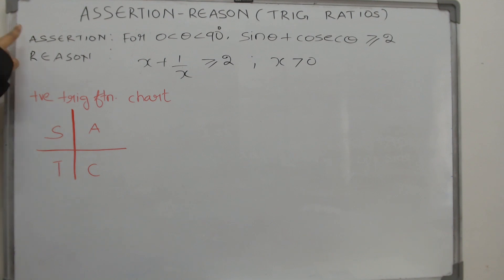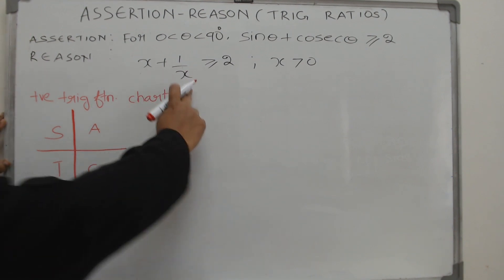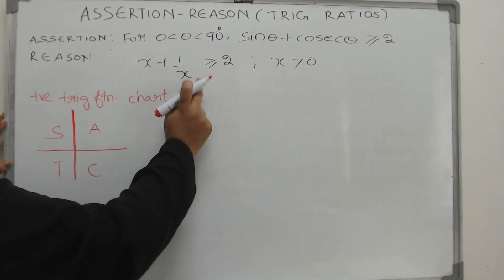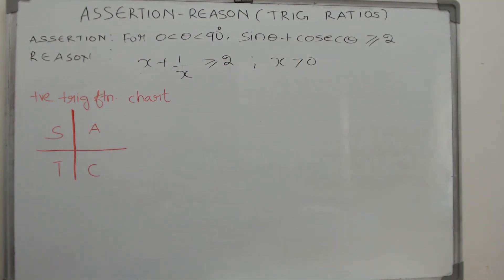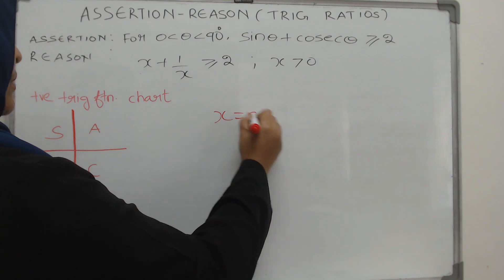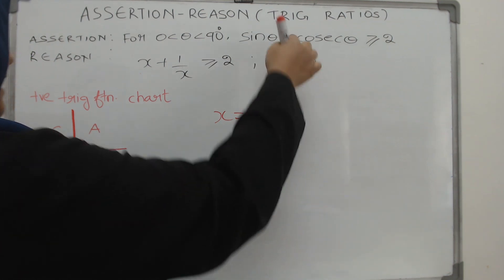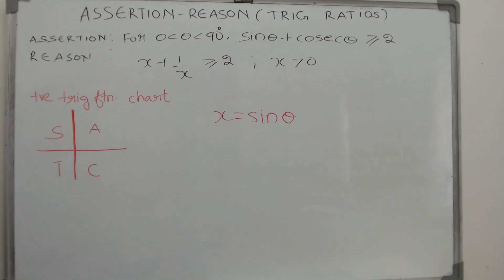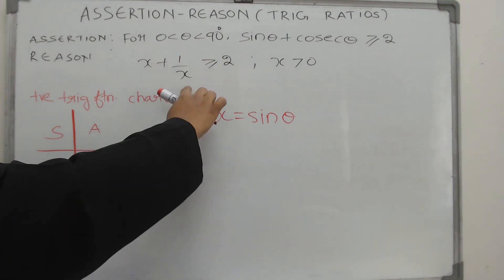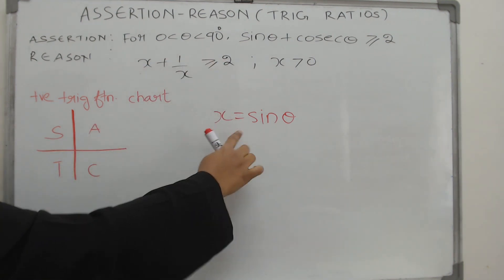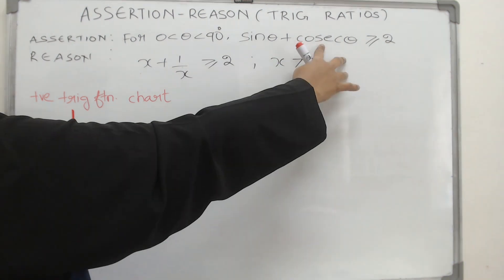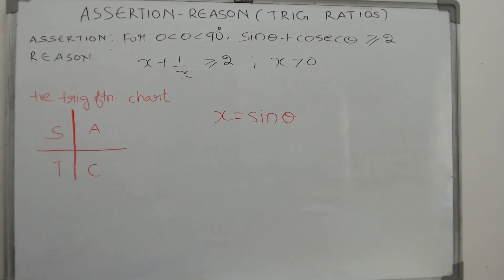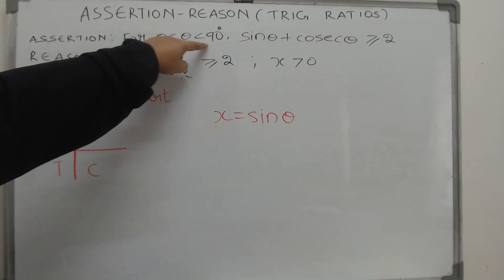We have two statements dealing with two inequalities. If you look carefully, if you take x equal to sine theta, these two inequalities will be identical — because one by x, which is one by sine theta, is cosine theta. So these two inequalities here are identical.